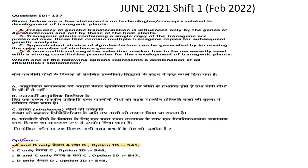Statement D: a non-conditional negative selection marker has to necessarily be used with a strong constitutive promoter for the development of transgenic plants. That is also not correct — it need not always be used. So options A and D are correct as incorrect statements.